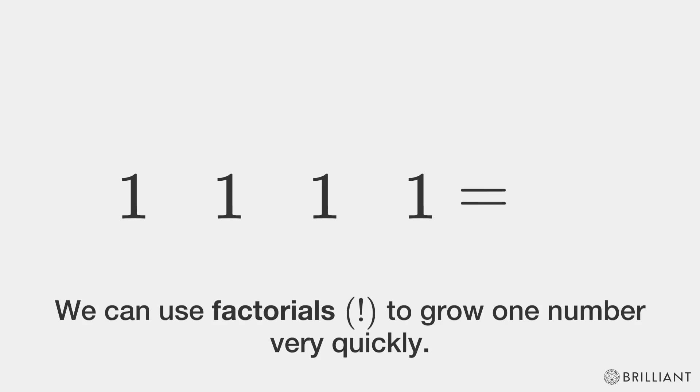We can use factorials to grow one number very quickly. 3 factorial is 6, minus 1 is 5.